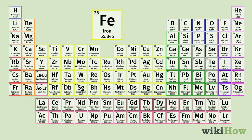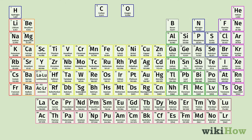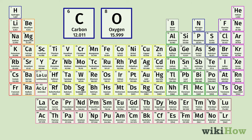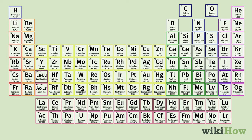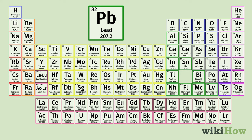When you look at individual elements on the periodic table, there are several pieces of information that you can find on each square. Every element has a one- to three-letter symbol that represents the name of the element. While some of these are pretty obvious, like O for oxygen and C for carbon, others don't necessarily match the common name of the element. For instance, the symbol for lead is Pb, from the Latin word for lead, plumbum.